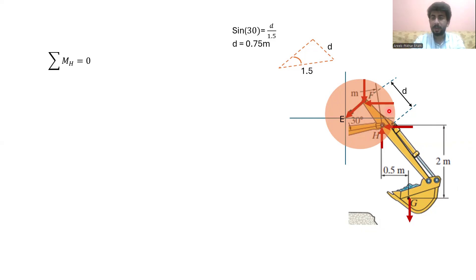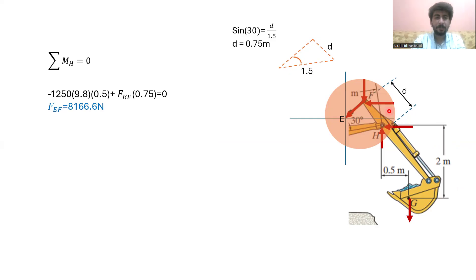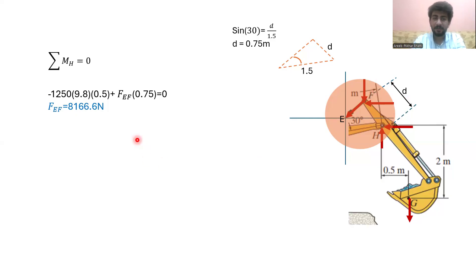Now I can apply moment at point H. When I apply the moment, I get this equation which says that the mass of the shovel is about 1,250 kg and 9.8 N force is acting downward at point G with a perpendicular distance of about 0.5 meters. This is negative because it is moving in clockwise direction. I have force in cylinder EF with a perpendicular distance of about 0.75 meters, so I get the force in cylinder EF which is equal to 8,166.6 Newtons.